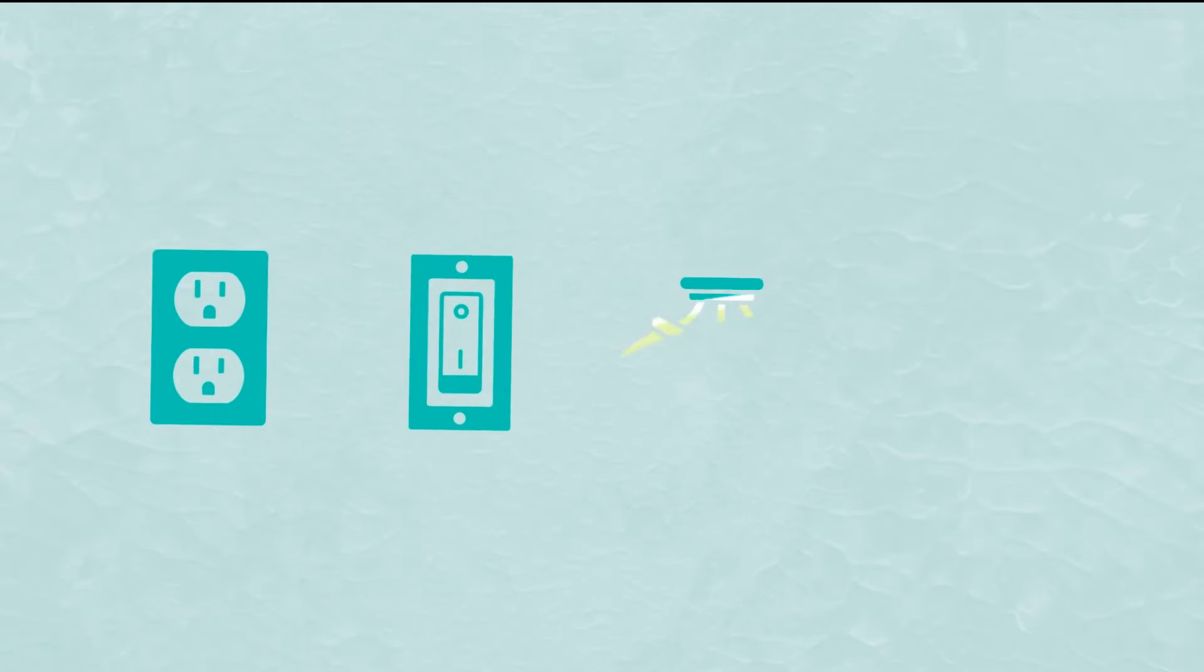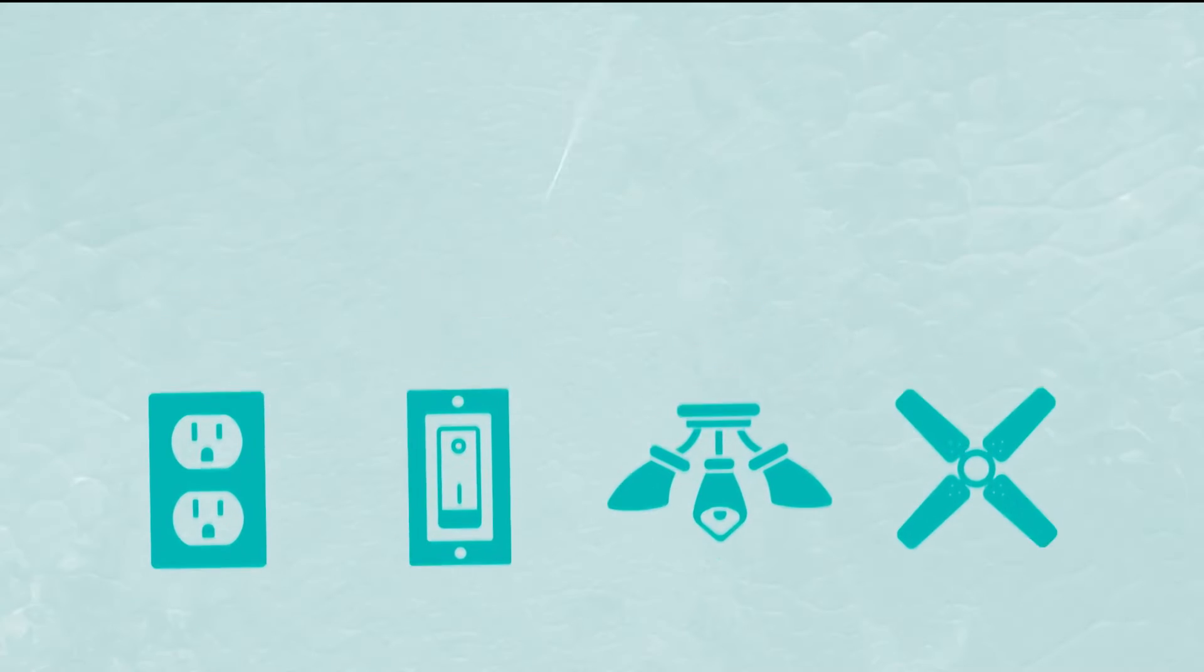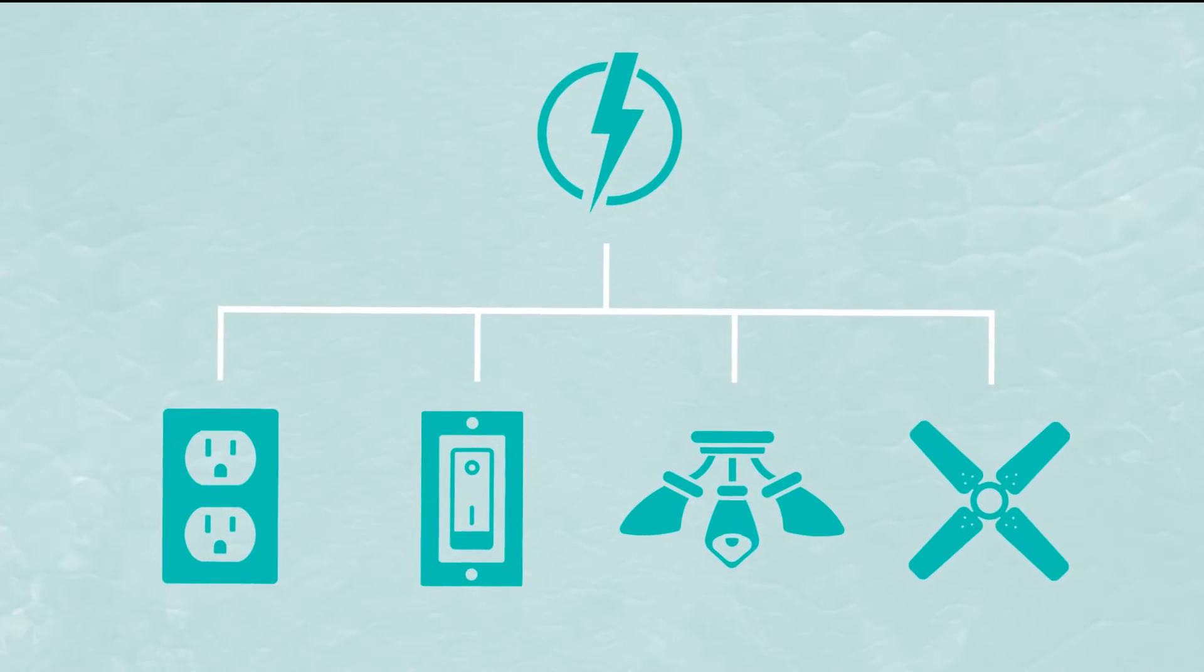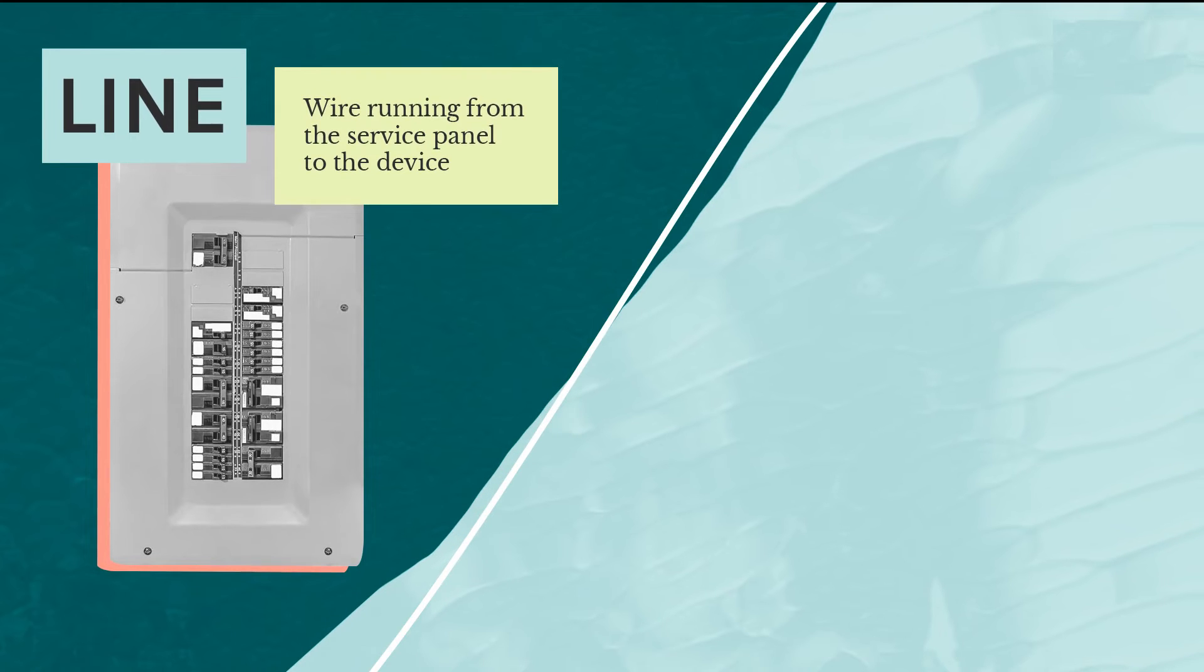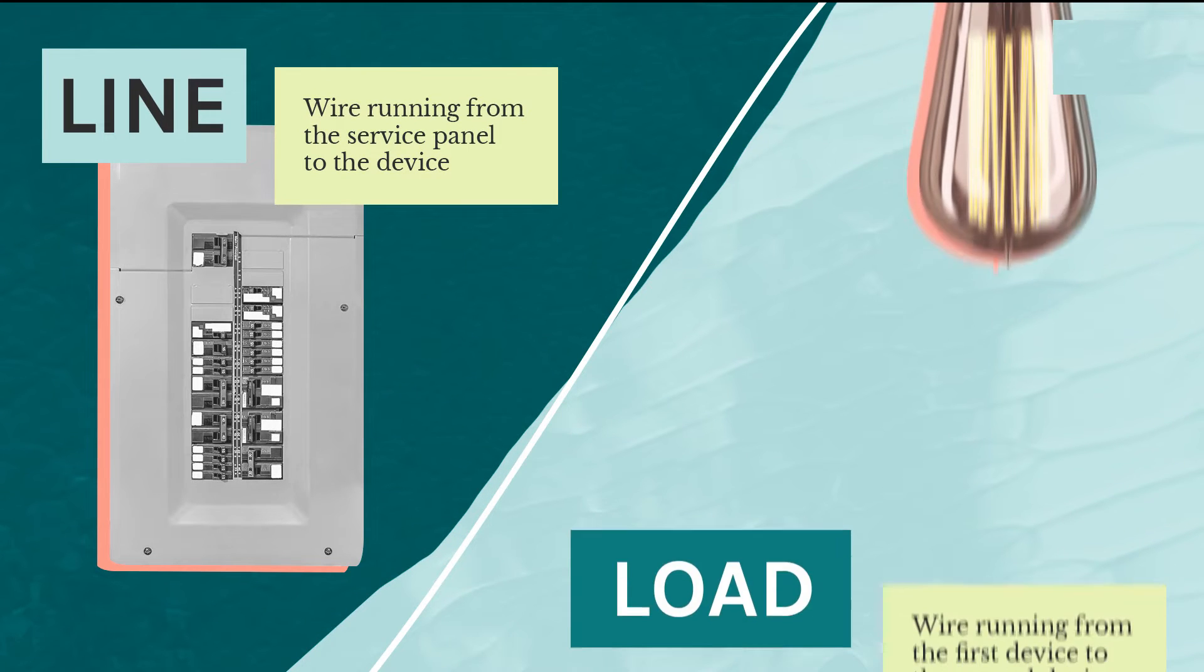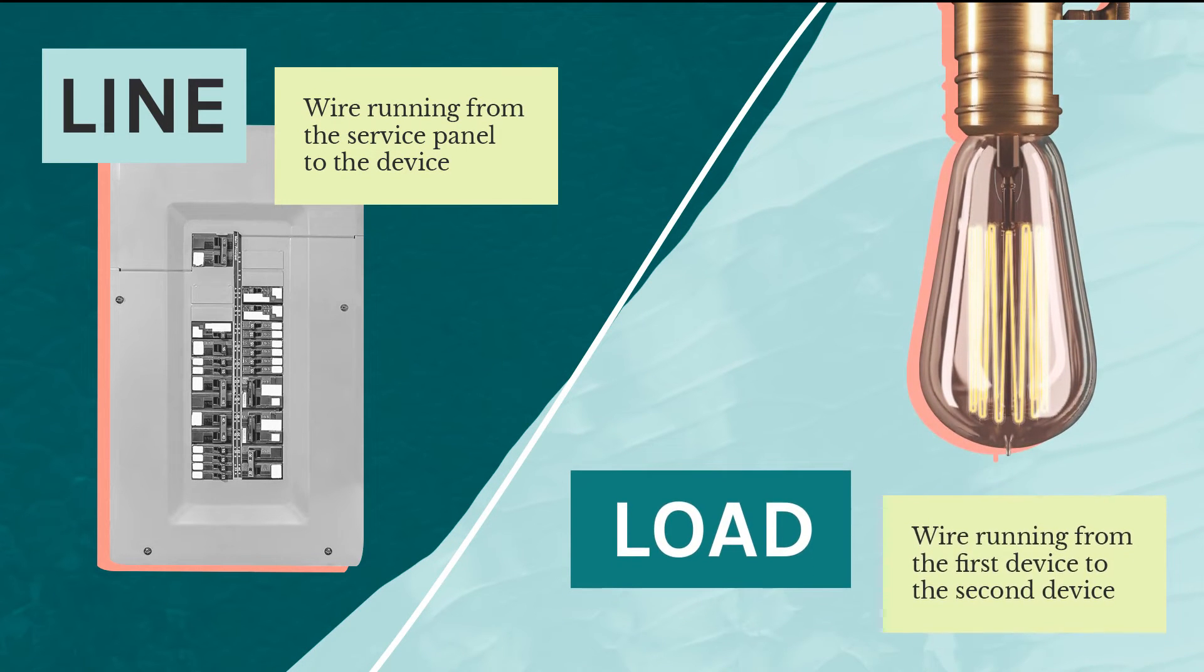Outlets, switches, light fixtures, and other electrical devices are typically wired in multiples on a single circuit. With the first device, the line is the wire running from the service panel to the device, and the load is the wire running from the first device to the second device downstream on the circuit.